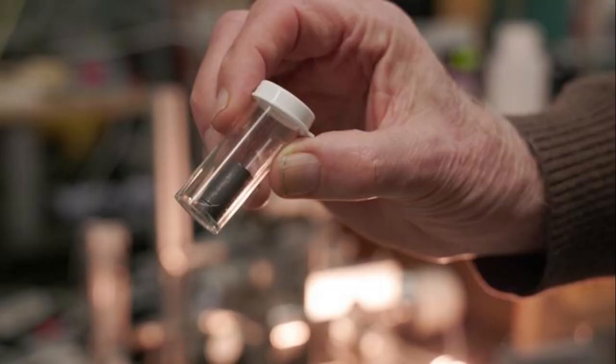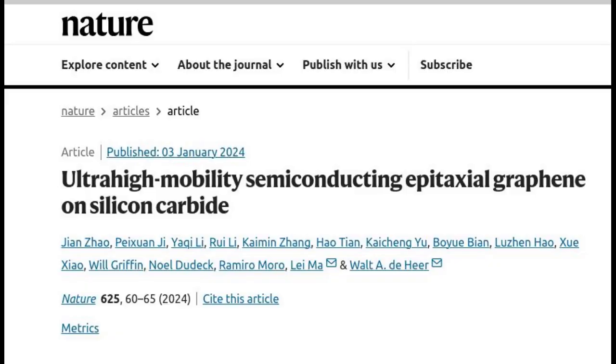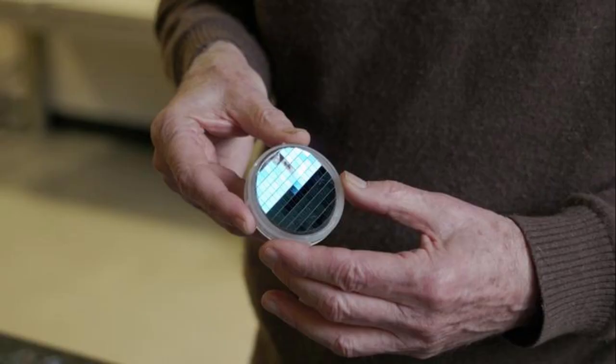In this latest research, published in Nature, D. Heer and his team overcame the paramount hurdle that has been plaguing graphene research for decades, and the reason why many thought graphene electronics would never work. Known as the bandgap, it is a crucial electronic property that allows semiconductors to switch on and off. Graphene didn't have a bandgap until now.